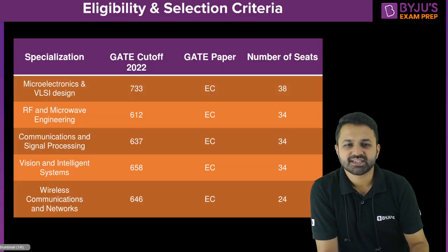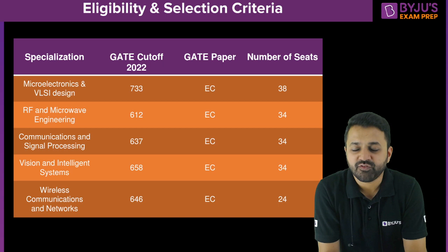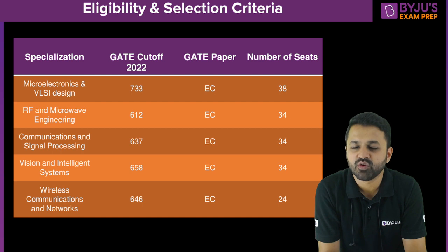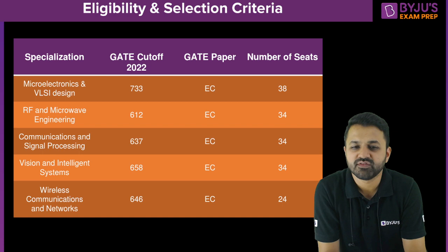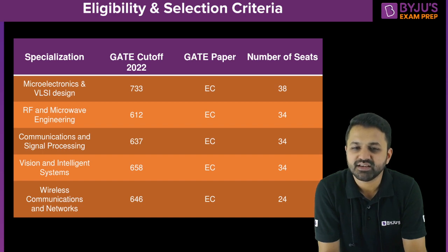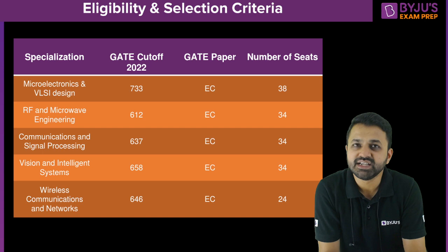Let's discuss the EC branch first, then EE, and then the common branches for both. For Microelectronics and VLSI Design, the previous year GATE cutoff score is 733, GATE paper is EC, and the number of seats is 38. RF and Microwave Engineering has a cutoff of 612, GATE paper EC, seats 34. Communication and Signal Processing cutoff is 637, GATE paper EC, seats 34.